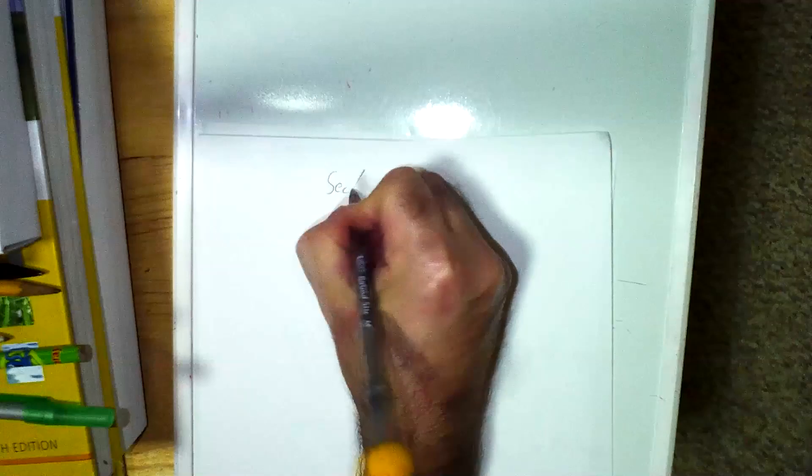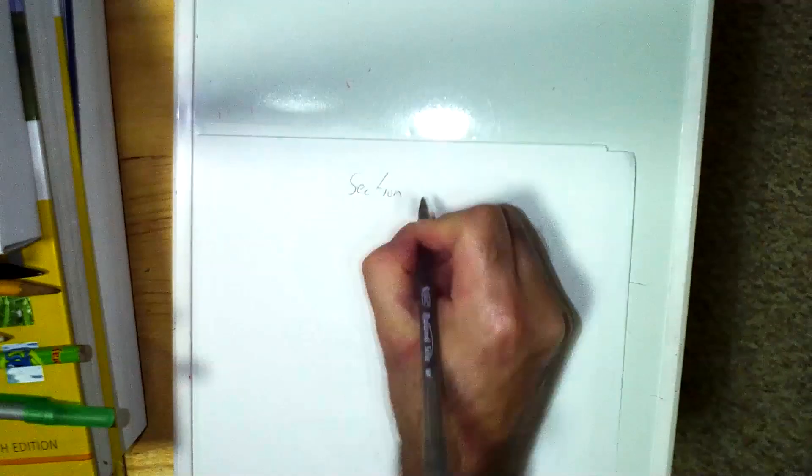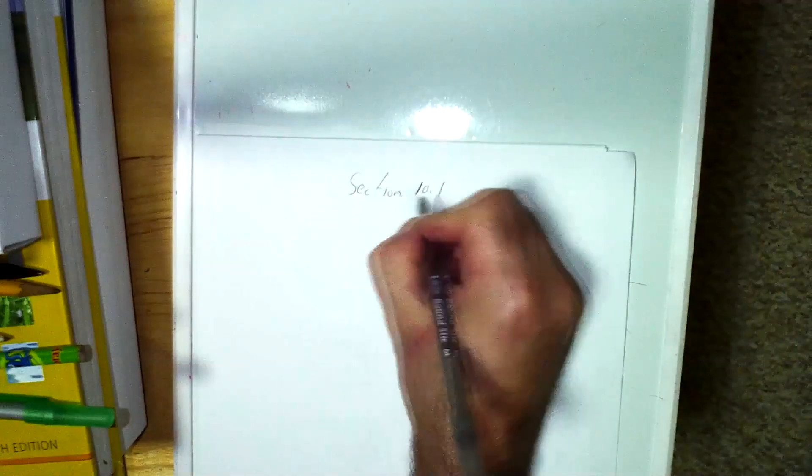Today I'm going to go over 10.1 and 10.2 with you. So let me tell you what sections 10.1 and 10.2 are all about. Section 10.1 is called correlation.